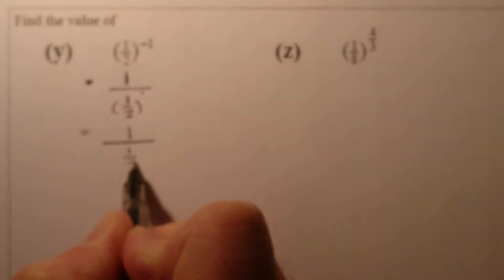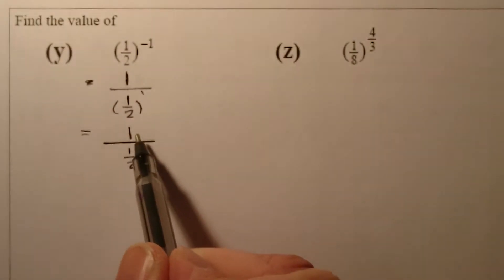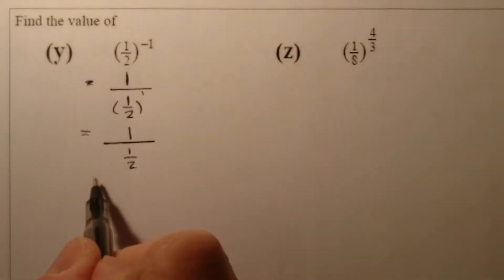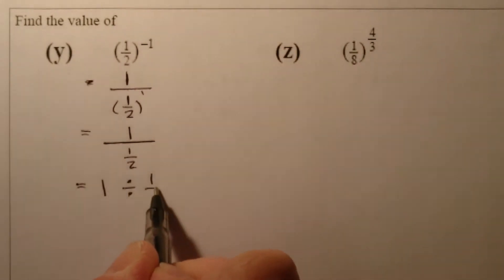All that really looks like is one over a half, and what that really means is one divided by a half. So let's write that out like you would normally see it, one divided by a half.